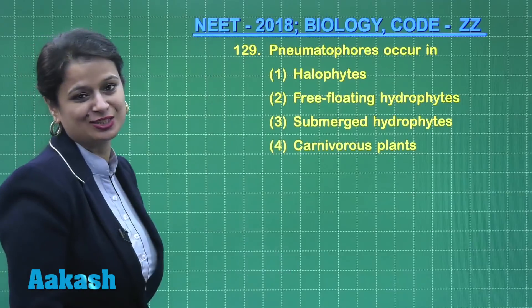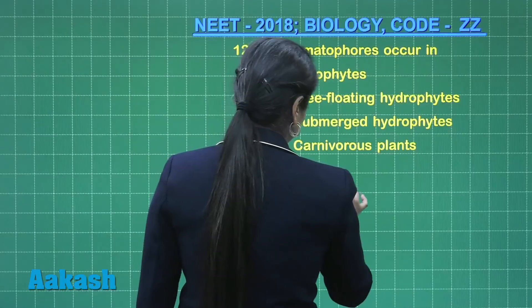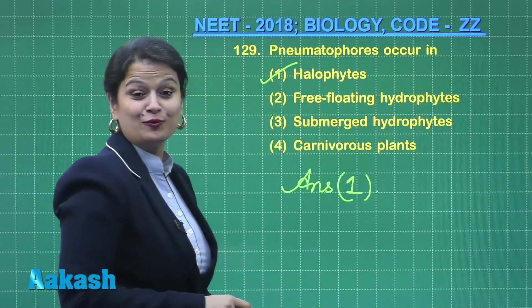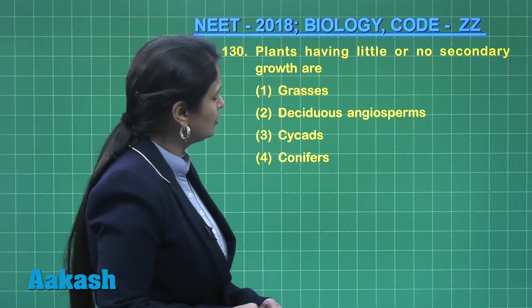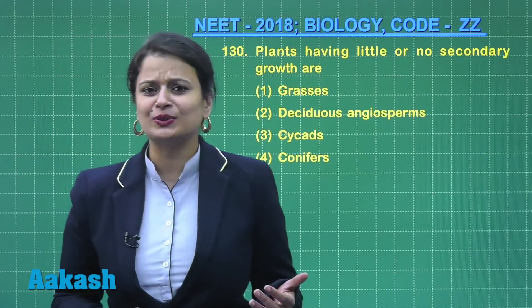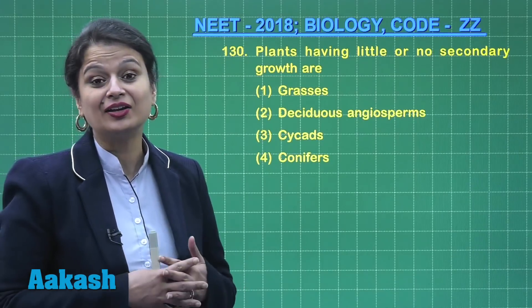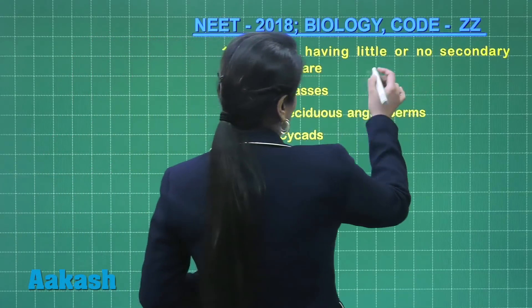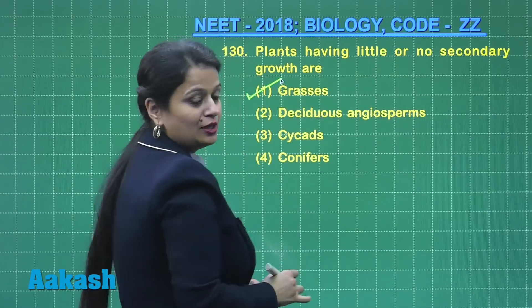That's why these roots are called aerophores — they are respiratory roots, also known as pneumatophores. So the right answer for question 129 is option number one. Moving to question number 130: plants having little or no secondary growth. Secondary growth occurs with the help of a lateral meristem known as cambium, and in the case of monocots, cambium is absent. So grasses, being monocots, show no secondary growth — the right answer is option number one.